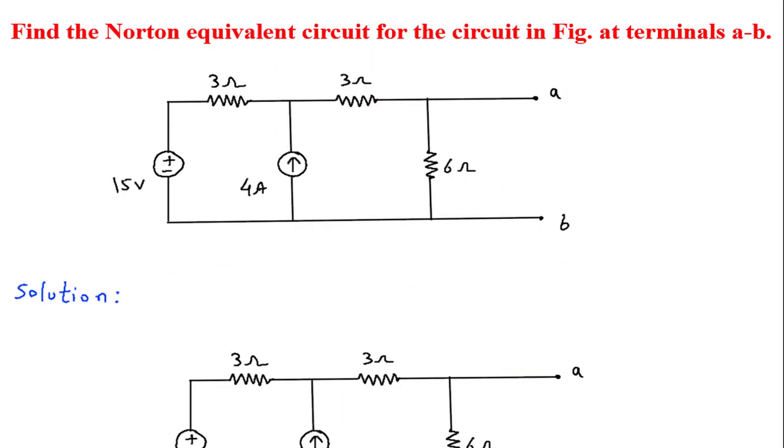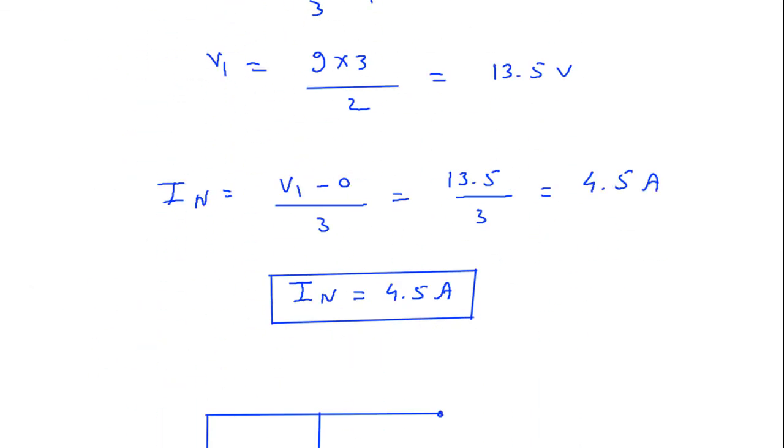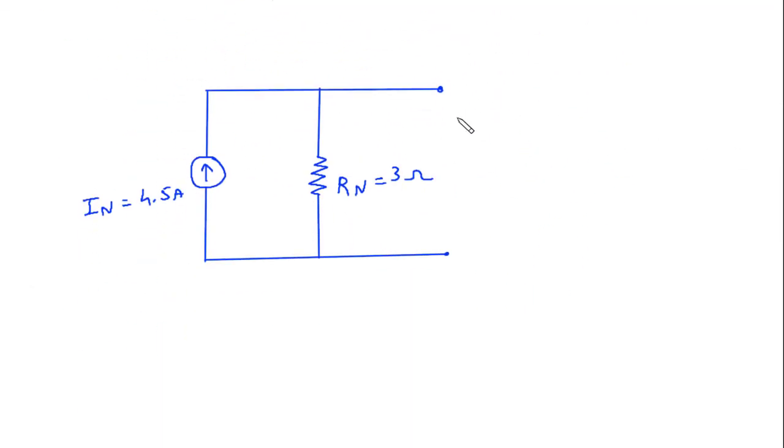What we have to find? We have to find Norton equivalent circuit. So this is our Norton equivalent circuit. This is terminal A, this is terminal B. For electrical and electronics engineering related questions and answers, visit the link in the description below.